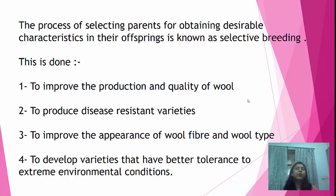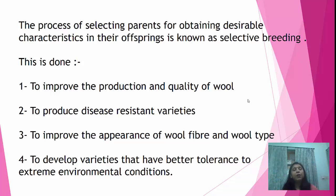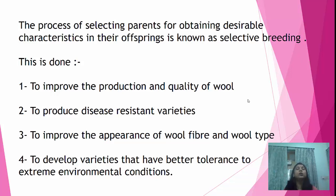The process of selecting parents for obtaining desirable characteristics in their offspring is known as selective breeding. For example, if one sheep has very good quality wool and another is disease resistant, when these two — a male and a female — are crossed or mated, the offspring will have good quality wool and also be disease resistant.